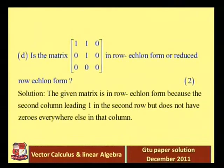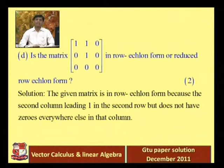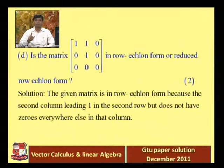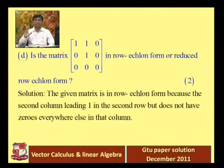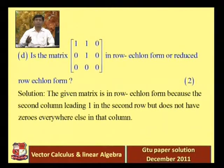Examining the given matrix: the first row has leading entry 1 with all zeros below it. The second row has leading entry 1 with zero below it, but there is a non-zero element (1) above it in that column. The leading entries go left to right, and the third row of zeros is at the bottom — all three row echelon form conditions are satisfied.